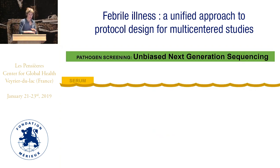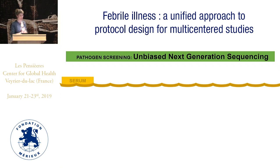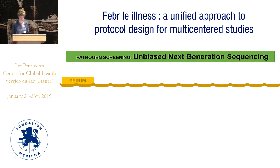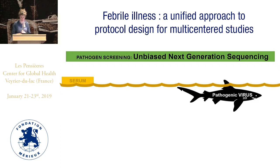We tried to use all the samples we collected on febrile children to do further testing and know if we really miss big infections. We tried to use next-generation sequencing on these patients. This is my postdoc's animation explaining what next-generation sequencing really is. Here you have the serum or blood of the patient, with a pathogenic virus you know — dengue, chikungunya — plus other viruses, viral debris, human debris, and mutants.